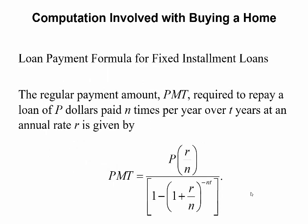So how do you figure out how much your mortgage payment is? The loan payment formula for fixed installment loans is used. The regular payment amount PMT required to repay a loan of P dollars, paid N times per year — usually 12 for monthly payments — over T years, with an annual rate of R is: PMT = P times (R divided by N), all divided by 1 minus (1 plus R divided by N) raised to the negative N times T power.